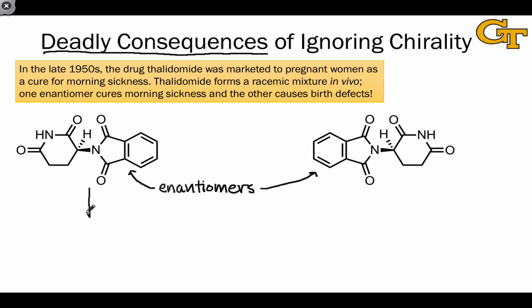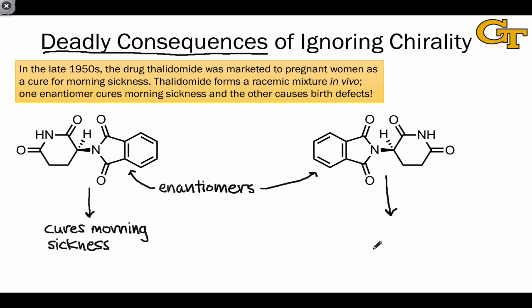One of these enantiomers — the one on the left — is the bioactive form that cures morning sickness. The other, which is formed in the body even if we start with a pure sample of the compound on the left, causes birth defects. By ignoring the stereochemical behavior of this molecule inside the body, we've given a drug to pregnant women that cures one affliction but causes one far worse.